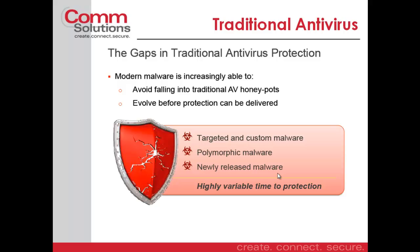Traditional AVs have problems with a lot of these targeted types of malware. AV providers need to see a lot of samples in order to create a signature for this type of malware. Being that this is very targeted, polymorphic, constantly changing, or newly released, it takes AV vendors a long time to provide protection for this new malware.